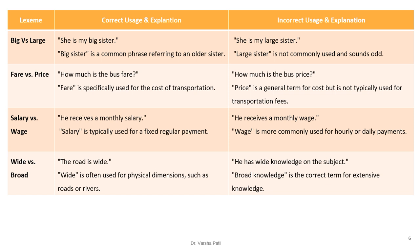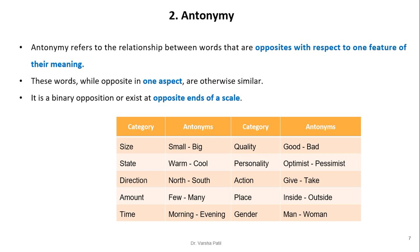Next is antonymy. Antonymy refers to the relationship between words that are opposite with respect to one feature of their meaning — they represent extremes on the same scale. These words, while opposite in one aspect, are otherwise similar. Examples on the same scale include: size — small/big; state — warm/cool; direction — north/south; amount — few/many; time — morning/evening; quality — good/bad; personality — optimist/pessimist; action — give/take; place — inside/outside; gender — man/woman.